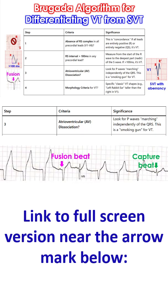Step 3: Look for P waves marching independently through the QRS. That is a feature of atrioventricular dissociation, almost a sure pattern of ventricular tachycardia. However, this will be difficult to identify in a fast ventricular tachycardia.